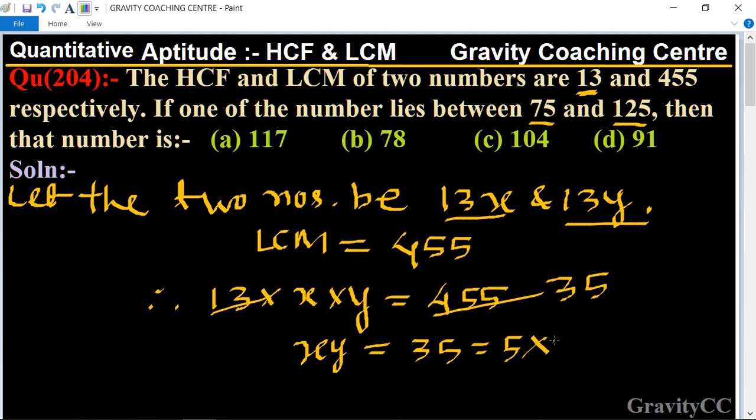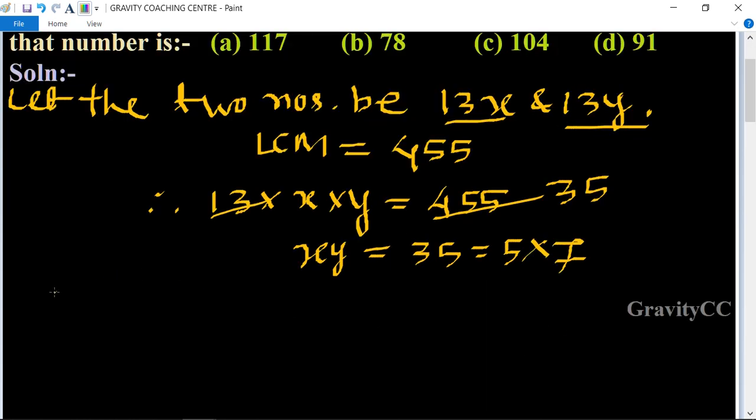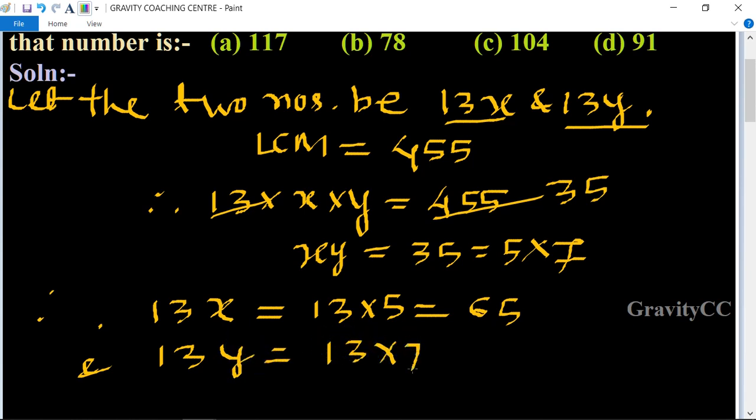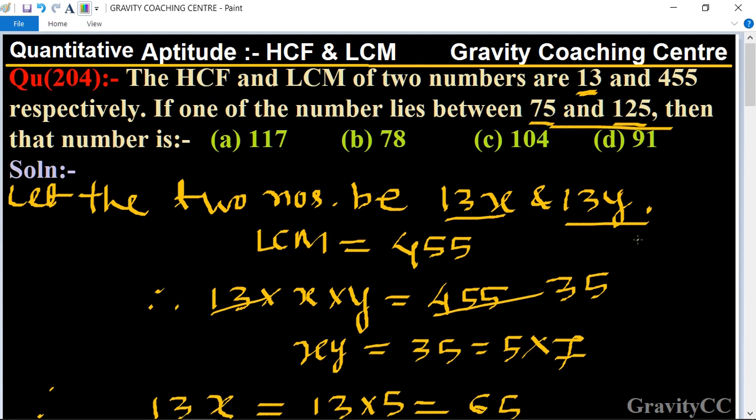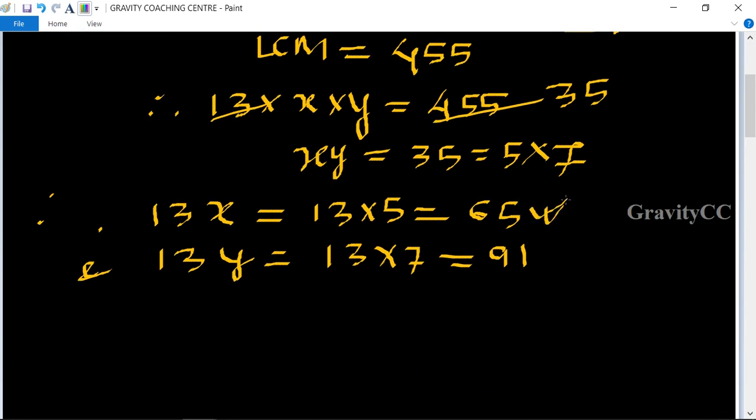Therefore, 13x equals 13 times 5 equals 65, and 13y equals 13 times 7 equals 91. According to the question, one of the numbers lies between 75 and 125.